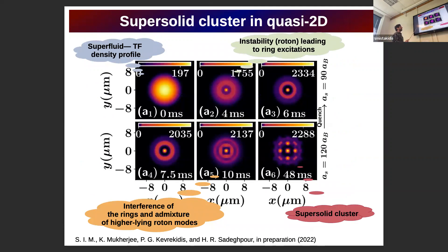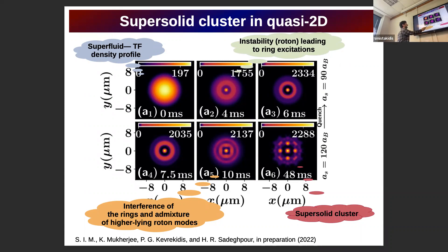Here you see density snapshots of a two-dimensional dipolar Bose-Einstein condensate for different time instants, starting from a superfluid with a Thomas-Fermi density profile and quenching towards a supersolid. At short time scales, ring-like patterns appear — this is a manifestation of the roton instability, and in particular the radial roton. As time evolves, these rings start to interfere and there is a magnification of the azimuthal undulation of the cloud, which is a signature that higher-lying angular roton modes participate in the dynamics, ultimately resulting in a supersolid cluster.